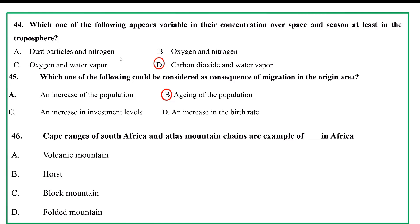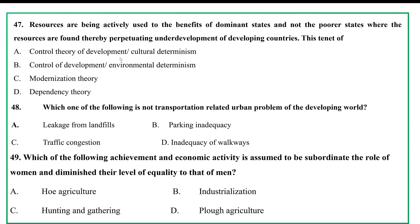Cape Range of South Africa and Atlas Mountain chains are examples of which type of mountains in Africa? A. Volcanic mountains, B. Block mountains, C. Fold mountains. In the context where resources are actively used to benefit the dominant state and not the poorer states where resources are found, this trend refers to: A. cultural determinism, B. environmental determinism, C. modernization theory, D. dependency theory.